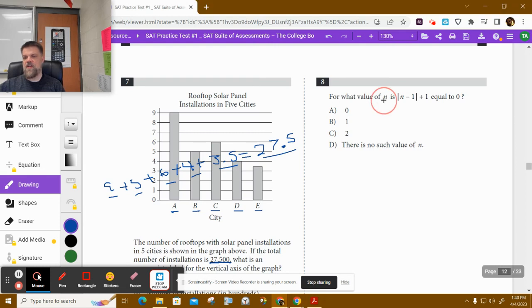All right, so this one says, for what value of n is |n-1|+1 equal to 0? So let's think about that.